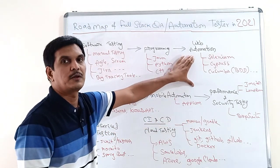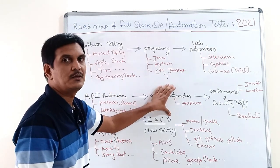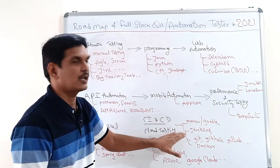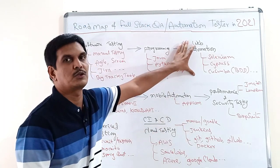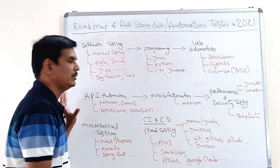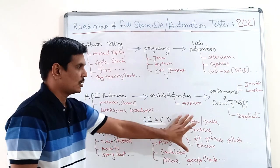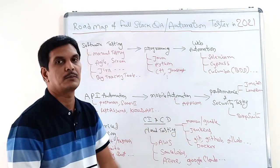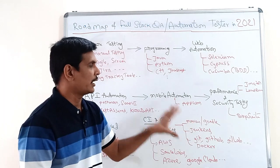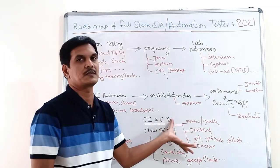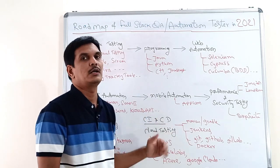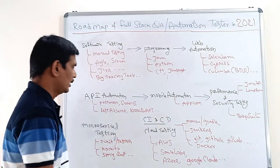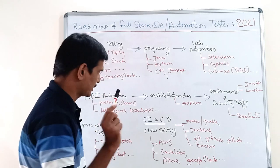You can learn these tools in parallel after completing web automation, API testing, or mobile automation. For example, when learning Selenium, you also need to know Maven and Jenkins. These concepts apply across web automation, API automation testing, and more. Maven, Gradle, Jenkins, GitHub, GitLab — these are very important, and especially in 2021 people are expecting some skills on these CI/CD technologies, which are also useful if you want to move to DevOps.